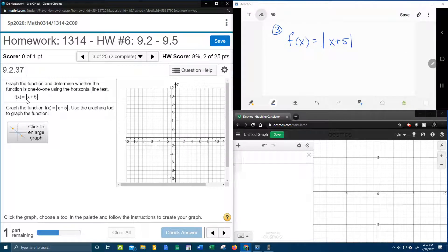Here we have f(x) is the absolute value of x plus five, and then it wants us to determine that the function is one-to-one using the horizontal line test.